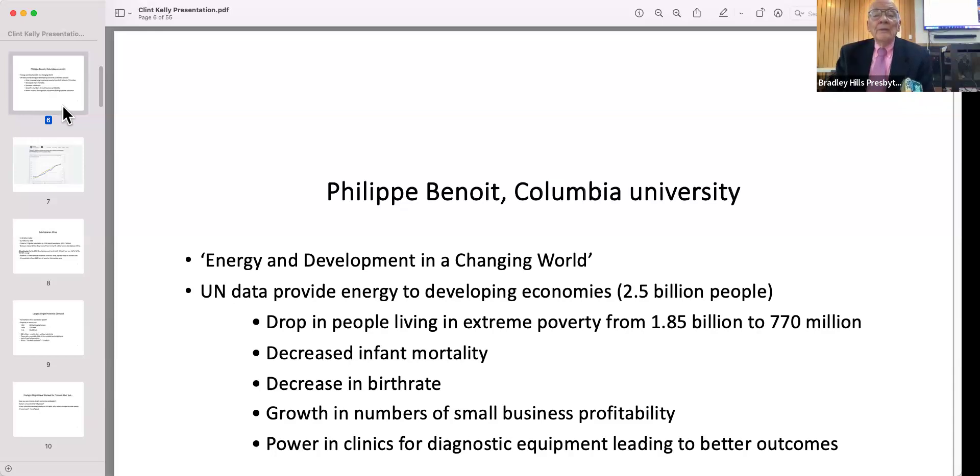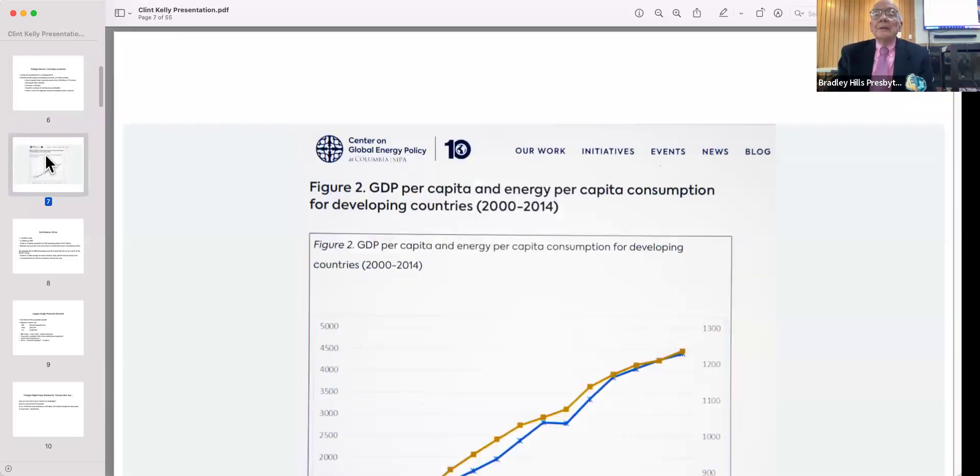The one I find interesting is the decrease in infant mortality. There is a positive correlation between energy consumption and decrease in birth rate, and there's also a correlation between decreased infant mortality and decrease in birth rate.